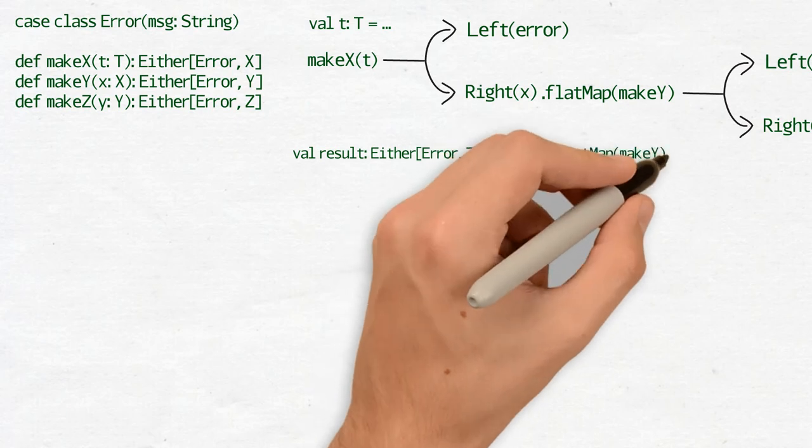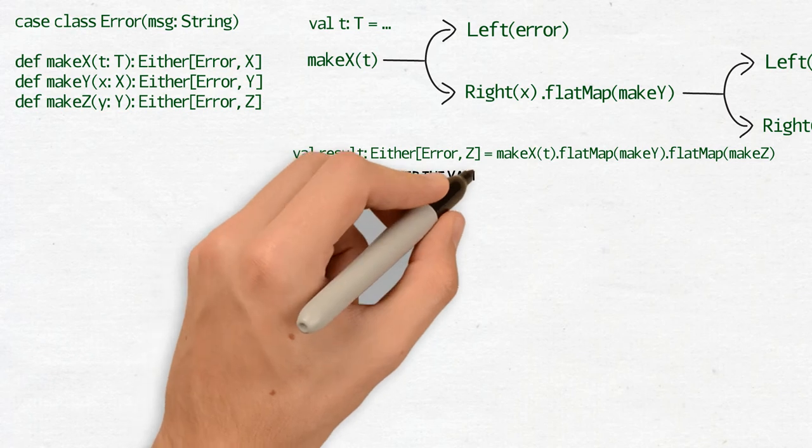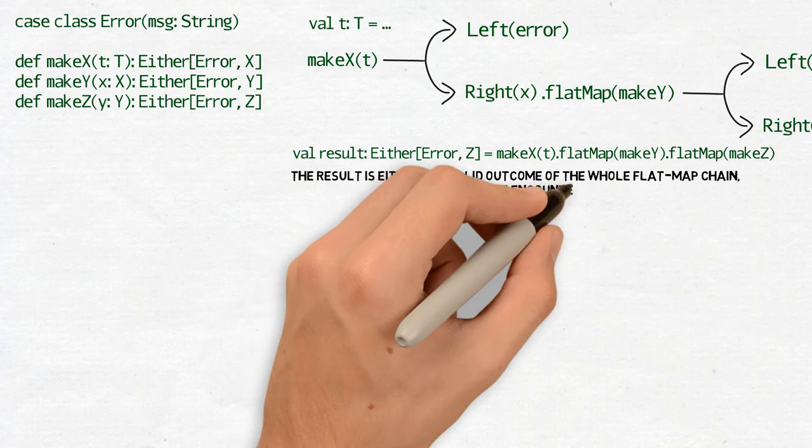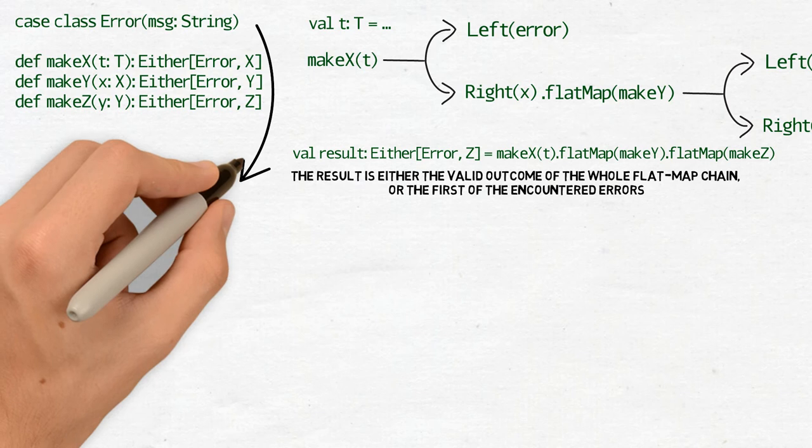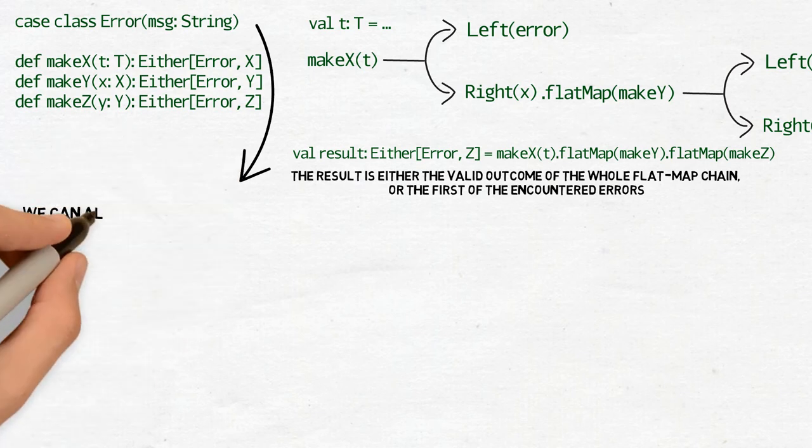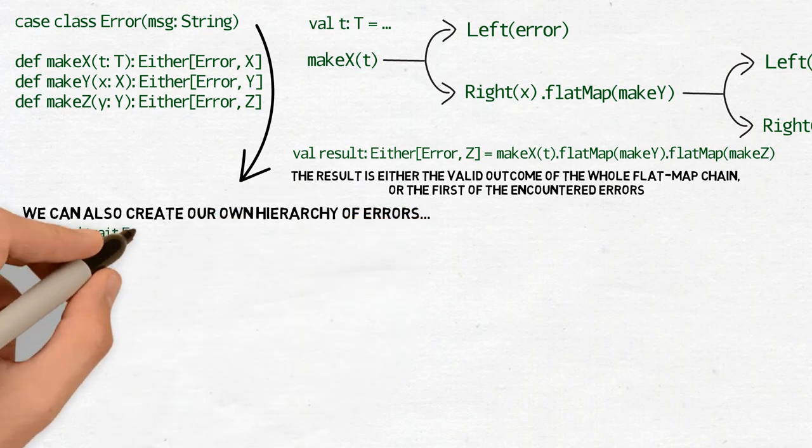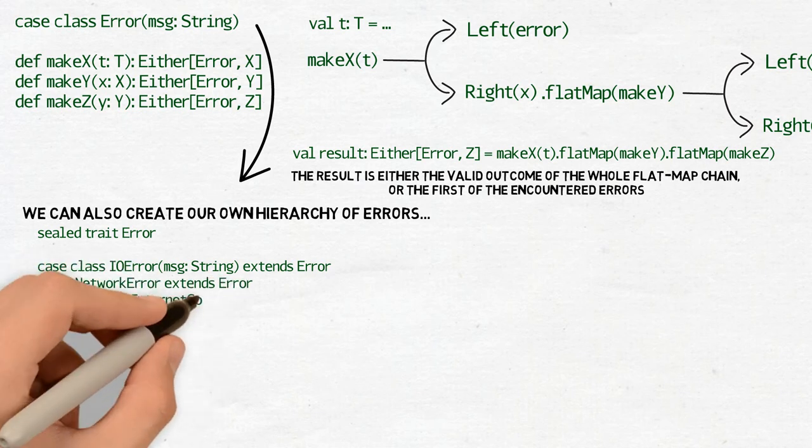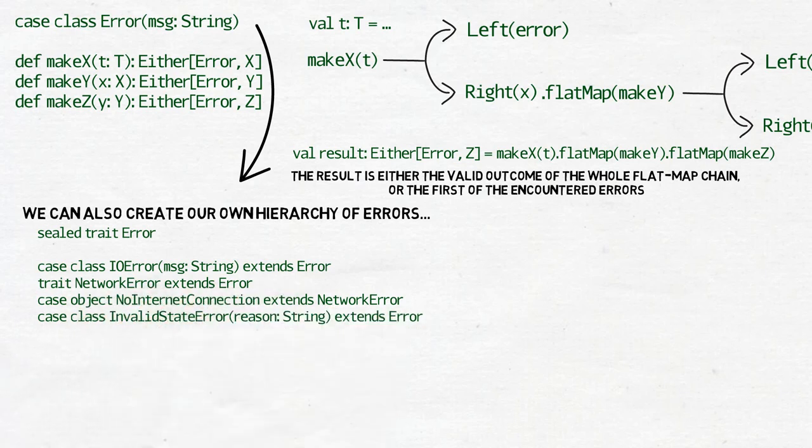In theory, the left part of either could be used for anything. It's only how the monadic rules were implemented that make it particularly suited for handling errors. And we use for it both the data itself. For example, as above, the error can consist of a text message describing the error, but also we can take advantage of the type system and create our hierarchy of errors. Error can be a trait. And then we can have classes of IO errors, network errors, invalid state errors, and so on.